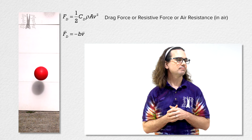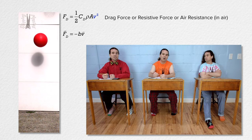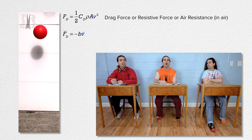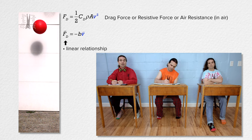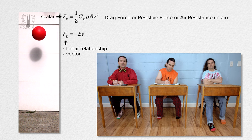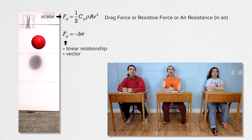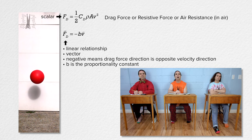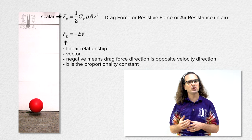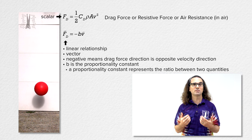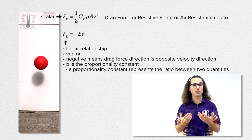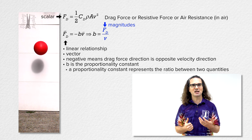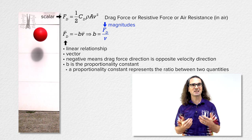The previous drag force equation has velocity squared in it, whereas this equation just has velocity. That means there is a linear relationship between drag force and velocity in the newer equation. Also, the previous drag force equation was a scalar and this drag force equation is a vector. The negative in the equation means the drag force is opposite the direction of the velocity of the object.